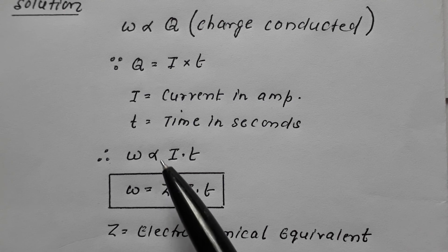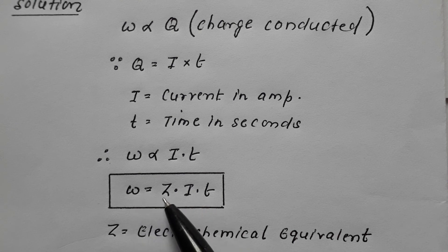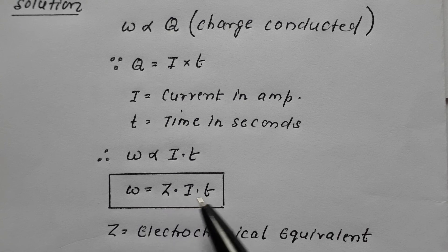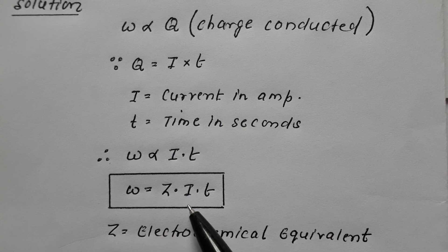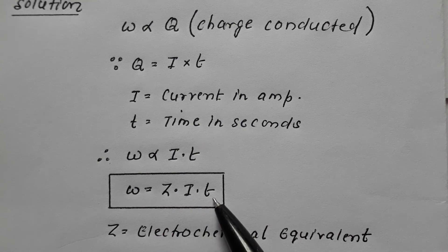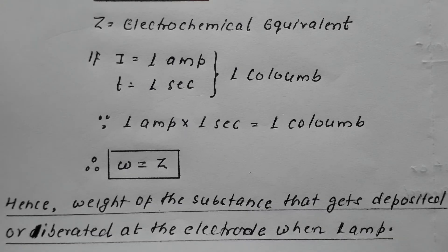To remove the proportionality sign we apply a constant Z, so we write W = Z × I × T. Here W is the weight of the substance deposited or liberated during electrolysis, I is the current in amperes, T is the time in seconds, and Z is termed as the electrochemical equivalent.